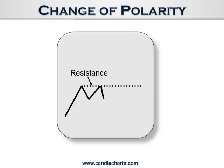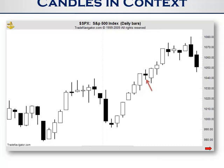Let me show you an example of a doji in context. One of my favorite rules — for those of you following our member site, mycandlesticks.com — is the change of polarity: if the market breaks out of a resistance area, that old resistance becomes support. This is a common rule in Western technicals. Old resistance becomes potential support. So here we have a doji, but notice what happened before the doji — we had a prior resistance area, and notice how it became support. Under no circumstances would I think about going short on that particular doji. This is a nice example of how a candlestick signal like a doji, when viewed in the context of the overall technical picture, tells us whether we should go long or go short.